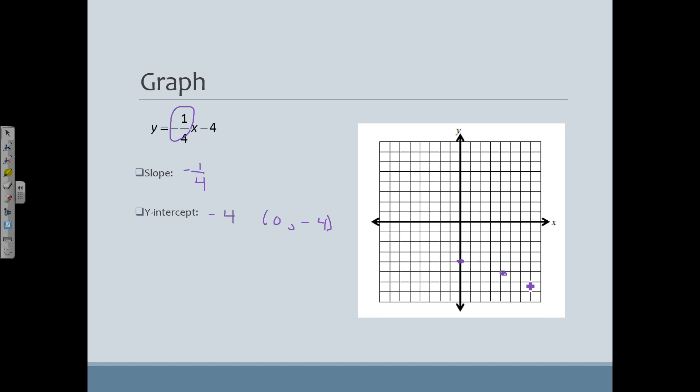Down 1 over 4. And remember, since my slope is negative, my line should be going in this direction. If I go up 1, I've got to go back in the negative direction, 4. Up 1, back 4. And when you're doing your work, I want you to graph several points so you get the idea.